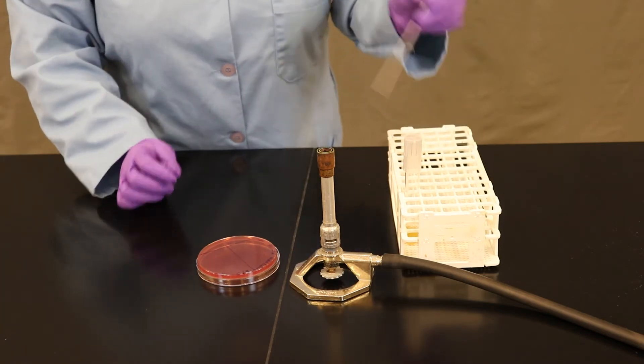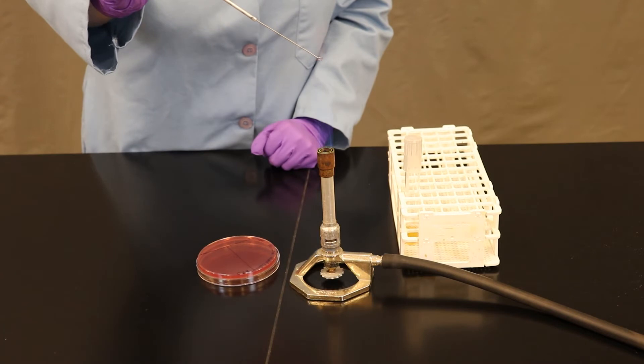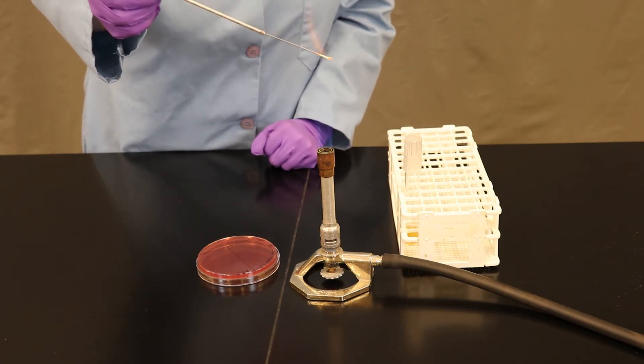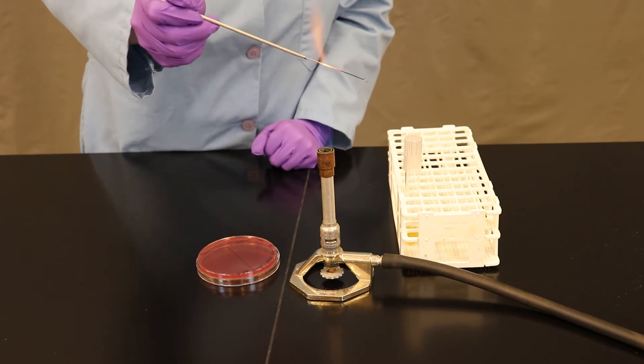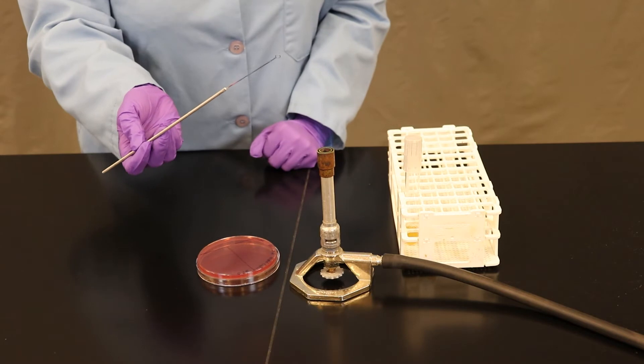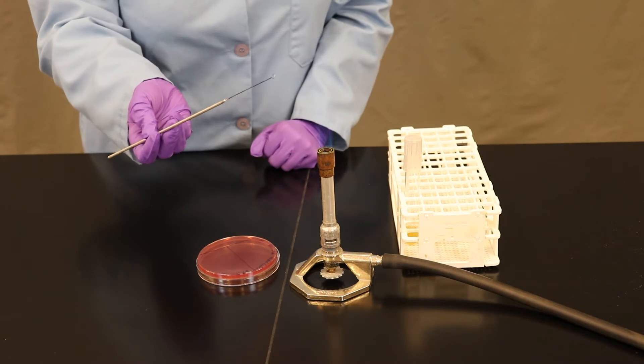Once labeled, I'm going to sterilize my loop by placing it through the inner cone, until the entire length of my wire turns bright orange. I'm going to allow my loop to cool. Remember, we don't place it on our glove or our skin, we don't cool it by blowing on it, and we're not going to wave it around.